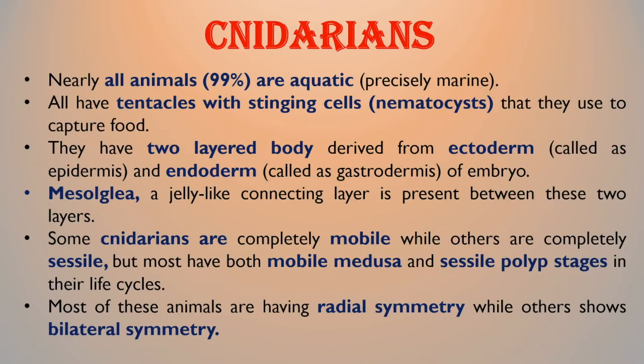The second group of invertebrates is cnidarians. Nearly all animals from this group are aquatic. All have tentacles with stinging cells called nematocysts, which they use to capture food. They have a two-layer body derived from the ectoderm and endoderm of the embryo.